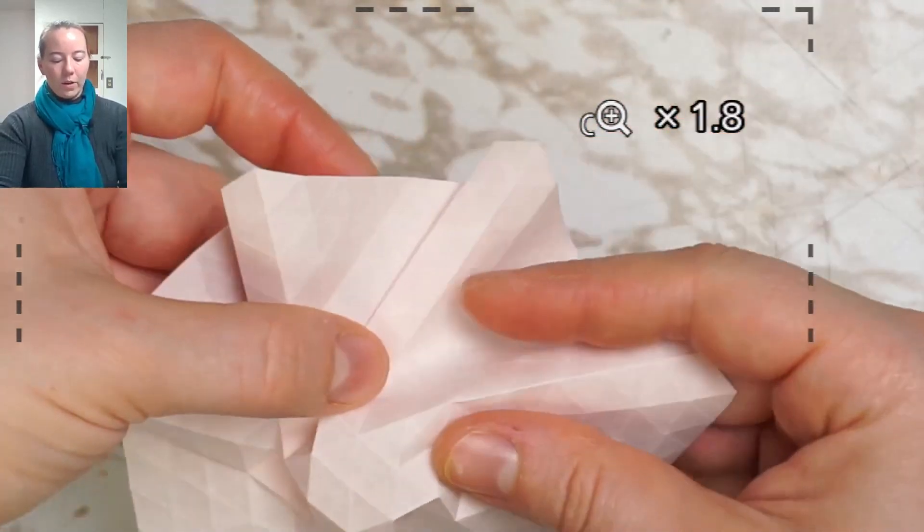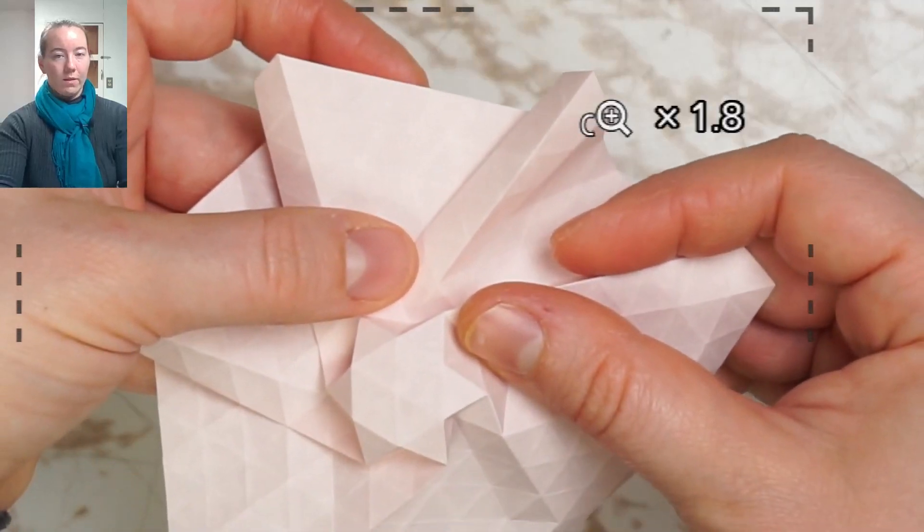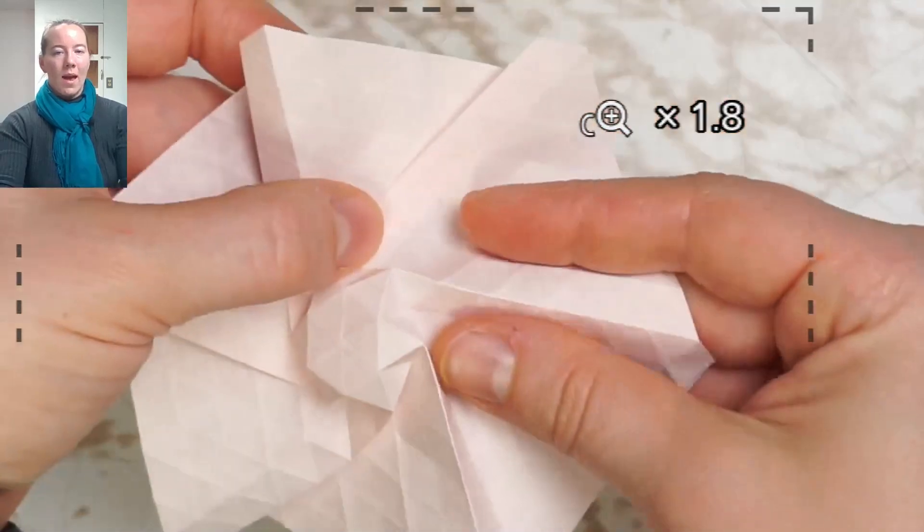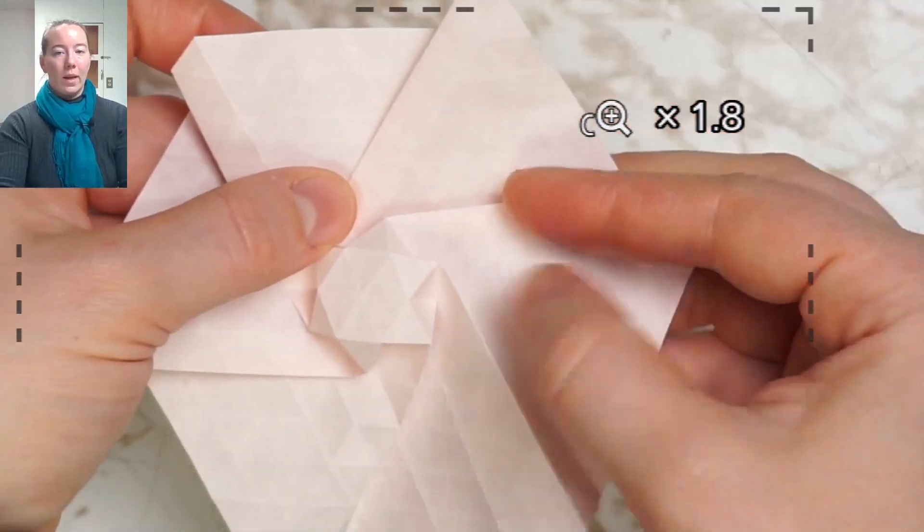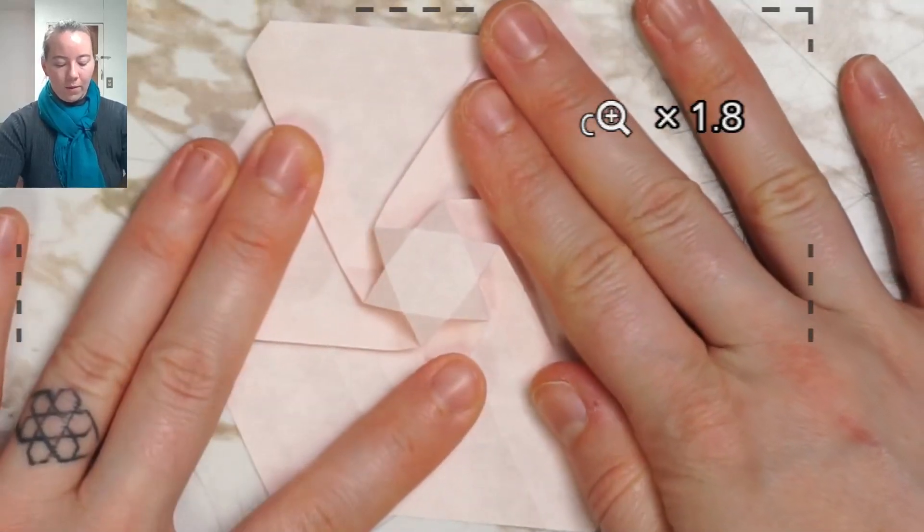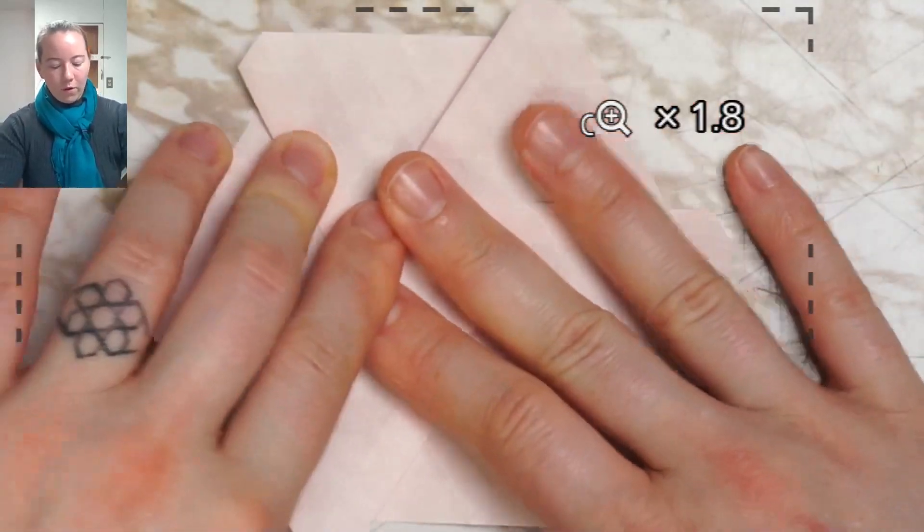Here I'm using cues both from the central hexagon and from the edge of the paper as I set up my remaining pleats. Once I've got that hexagon in place, I'm going to squash it.